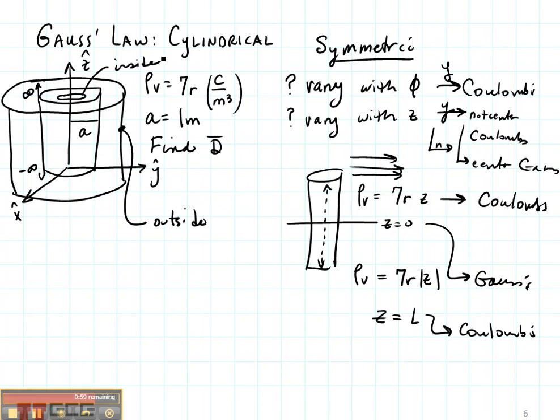So I'm going to choose my Gaussian surface two ways. I need to be sure that my system is symmetric. That means that my magnitude of D is going to be equal every place on this surface.